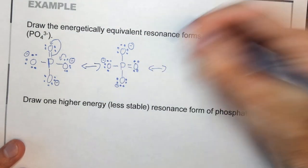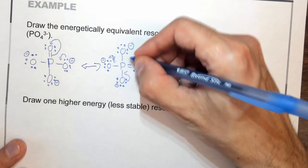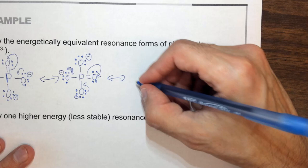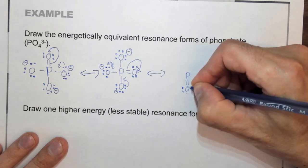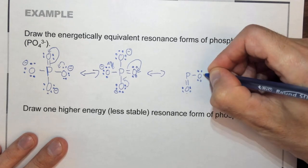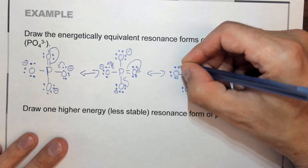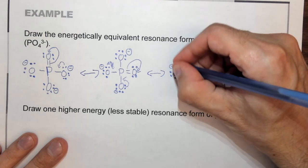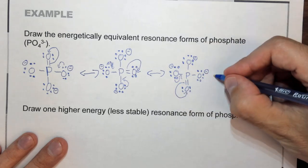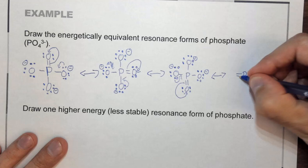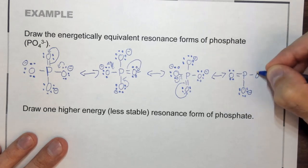Let's draw another resonance form. These two electrons go here, and those two electrons go back over there. We end up with phosphorus double bonded to the oxygen on the bottom, which now has one fewer lone pair and is now neutral, bonded to the top oxygen which now has an extra lone pair and is minus, while the other two oxygens with three lone pairs are still minus - they just went along for the ride. We can do this one more time: these two electrons go here, these two electrons go there, and we end up with another resonance form where the double bond is now here, that oxygen is neutral, and we have three single-bonded oxygens each with a minus charge.